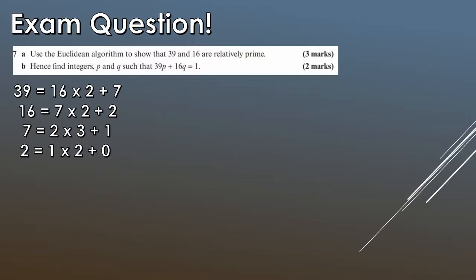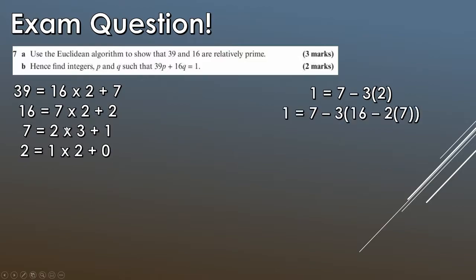That's not really what we're focusing on today — we're focusing on Bézout's identity, so let's go to part B. We start with the first non-zero remainder: 1 equals 7 minus 3 lots of 2. Now we substitute for 2: 2 equals 16 minus 7 times 2, giving us 7 minus 3 times (16 minus 7 lots of 2). Simplifying: minus 3 times minus 2 lots of 7 gives 6 lots of 7, plus the original 7, giving 7 lots of 7. So 1 equals 7 times 7 minus 3 times 16.